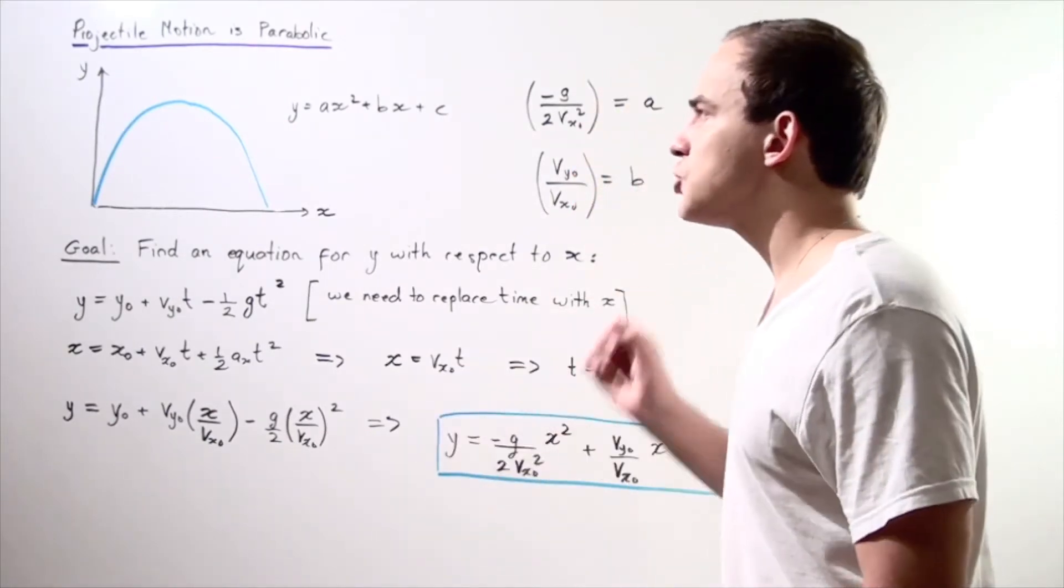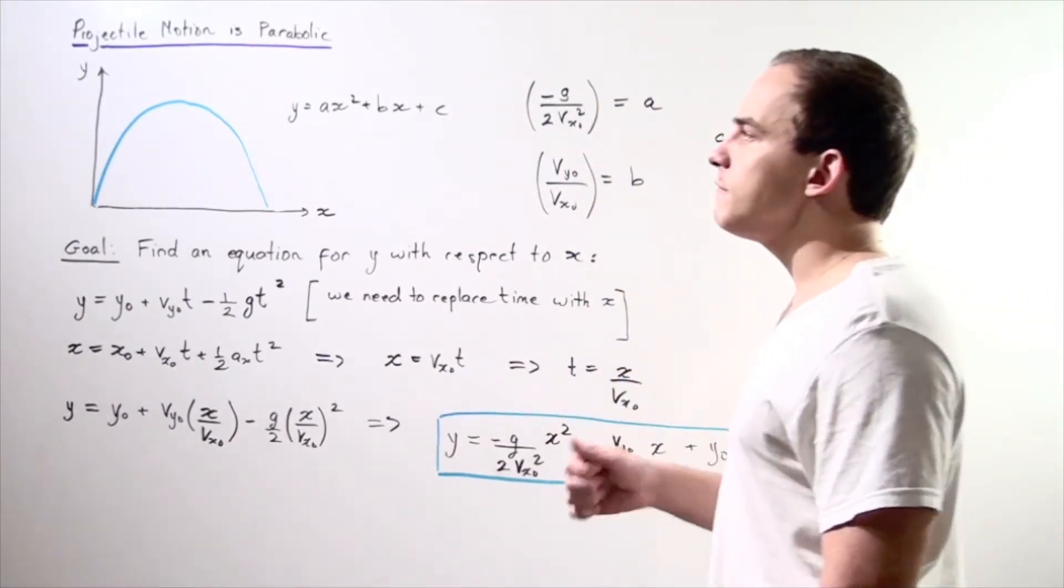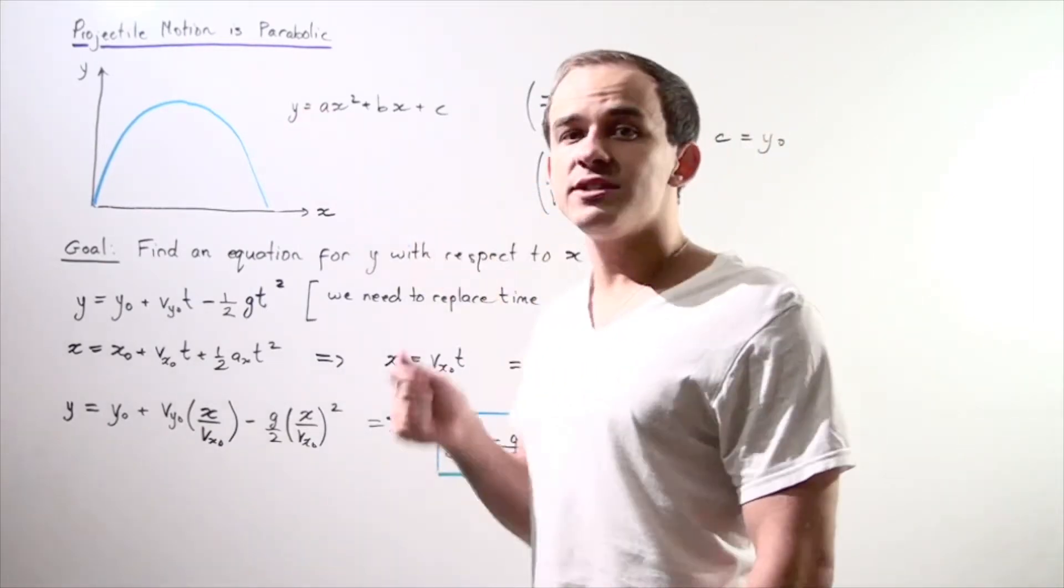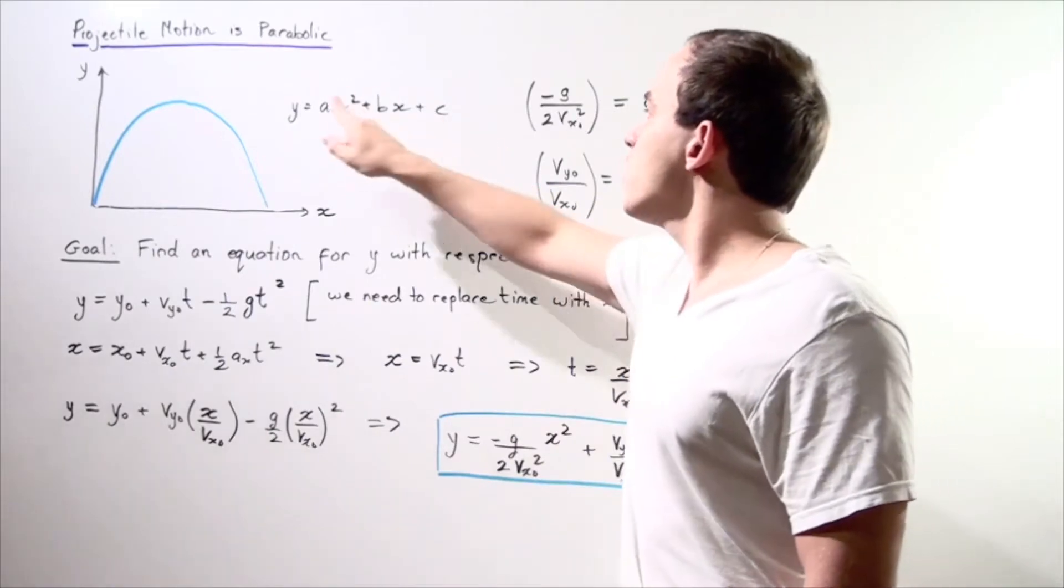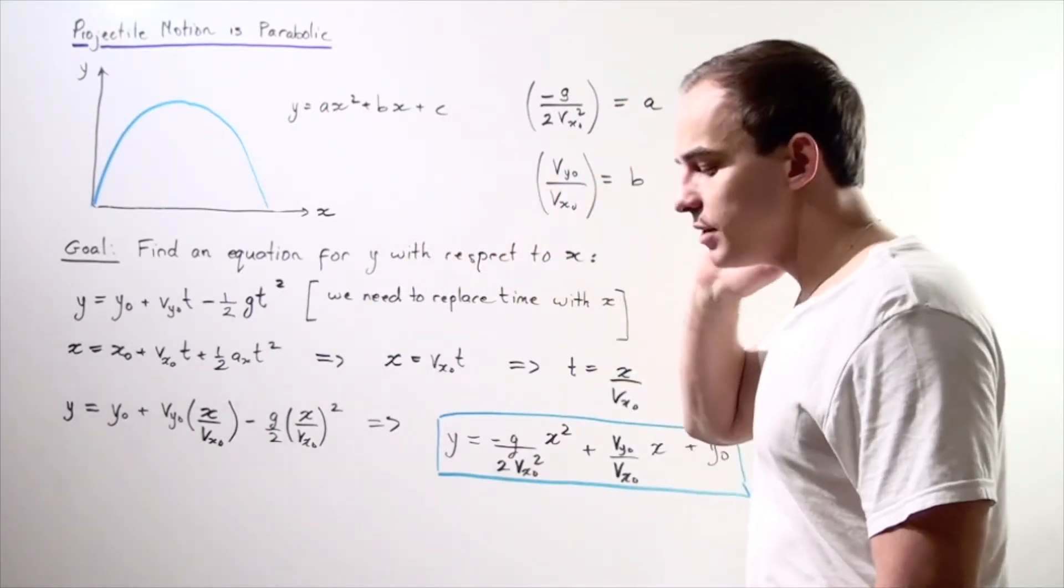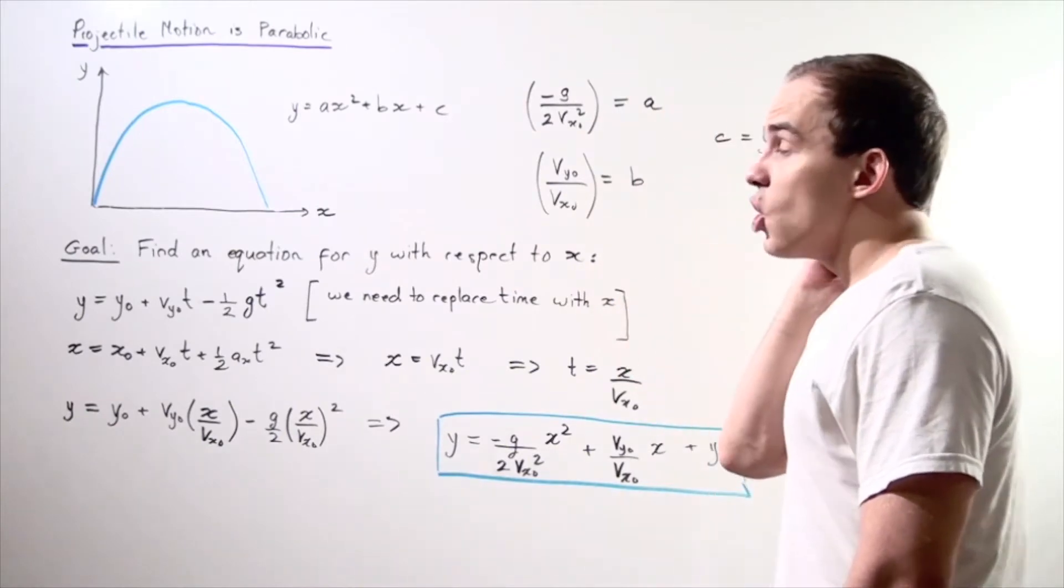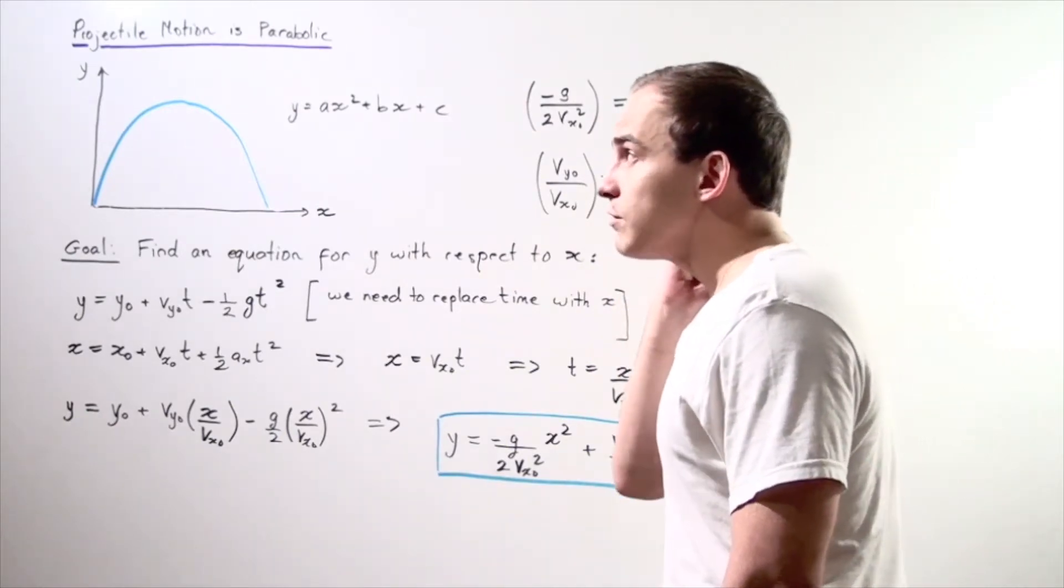let's recall what the general formula of a quadratic equation is. We have y equals ax squared plus bx plus c, where a, b, and c are simply our constants.